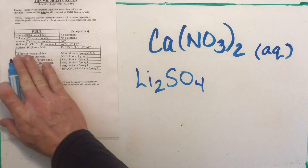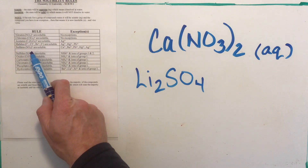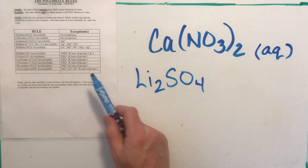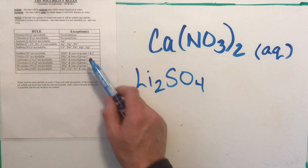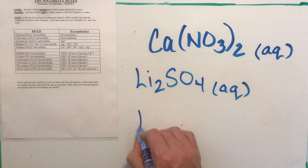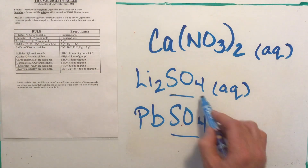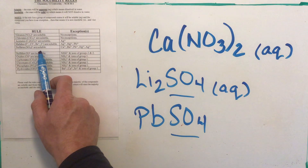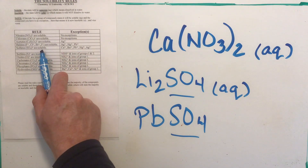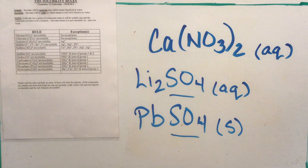Next example: lithium sulfate. The second half is sulfate — a polyatomic — and the rule says sulfates are soluble. I have to check whether lithium breaks that rule. Lithium is not one of the exceptions listed, so the rule stays — it's soluble and aqueous. Now if I had lead(II) sulfate, sulfates are soluble, but I have to check the exceptions. Lead(II) is listed as an exception, which means it's no longer soluble — it becomes insoluble — so lead(II) sulfate will be a solid.